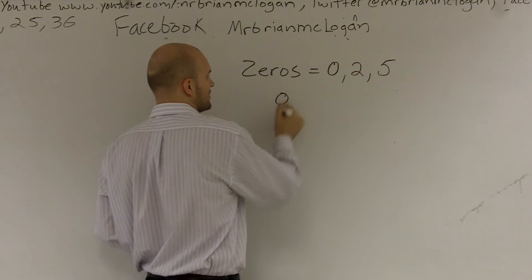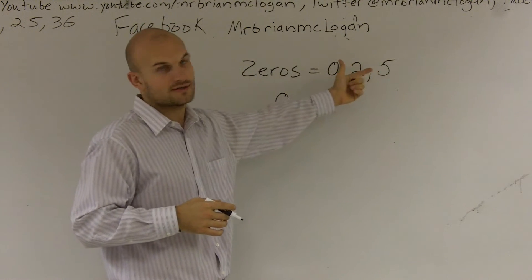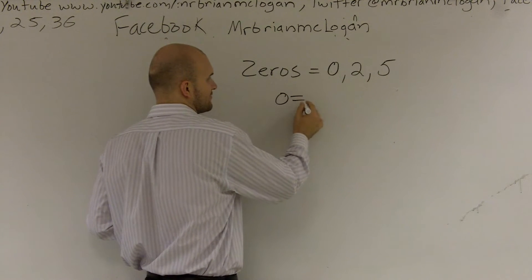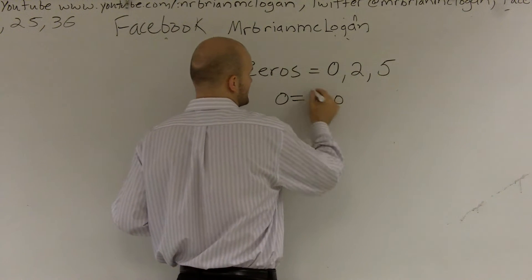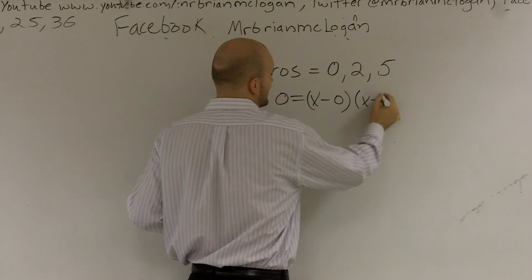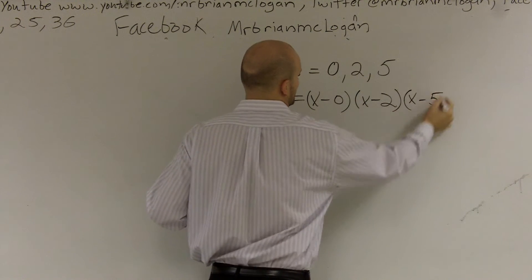So one thing you guys need to remember is if here's our zeros, I can write this as a set of linear factors: as x minus 0, x minus 2, and x minus 5, right?